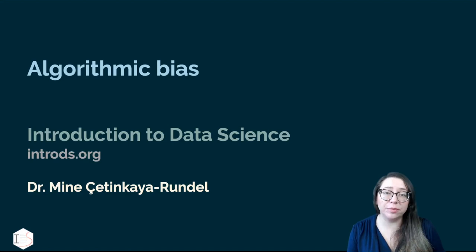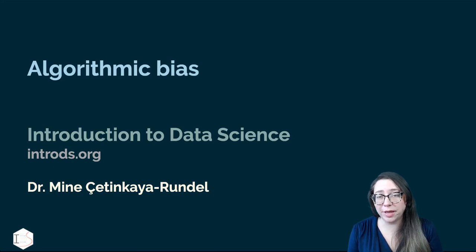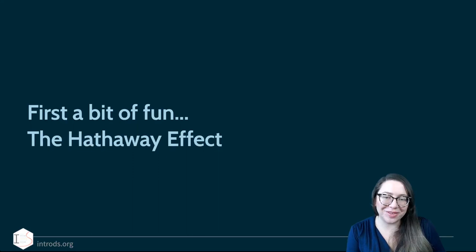In this video we're going to talk about algorithmic bias. We're going to start with a lighter example to showcase what we mean by algorithmic bias, and then we're going to talk more about concerns of greater societal importance in terms of where these algorithms are being used and how bias is affecting members of our society differently for different groups.